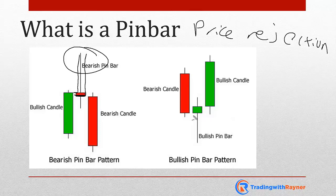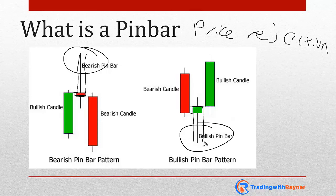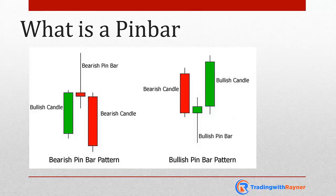For the bullish pin bar, it's the same principle but on the opposite end of the spectrum. Price opens, the bears came in and took charge, pushed price lower, and then the bulls came in and said no, that's as far as you're going to go — and they pushed price all the way back up higher, finally closing near the highs. What you have here is rejection of lower prices.